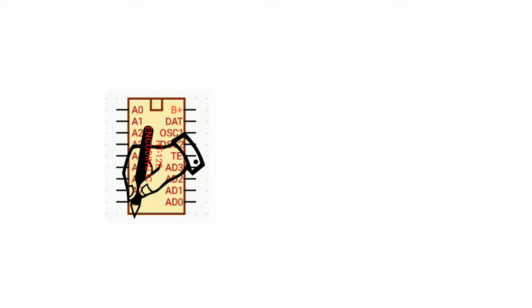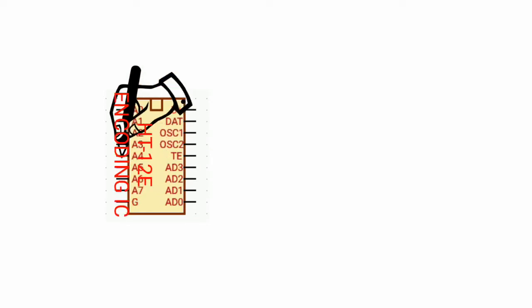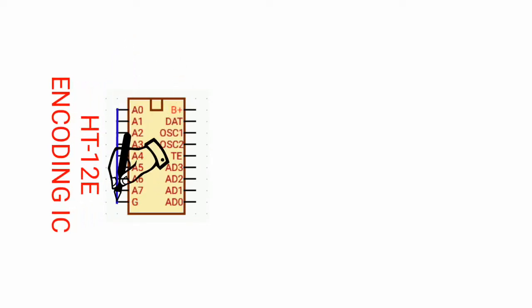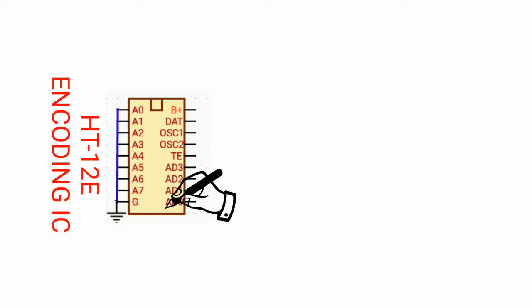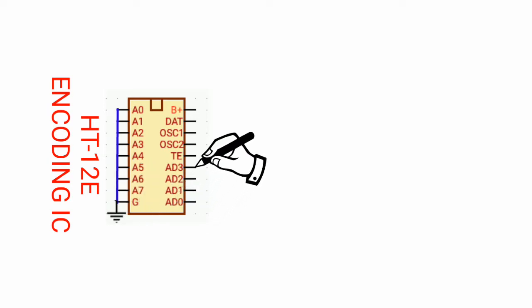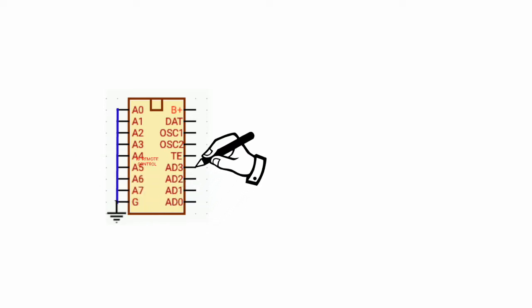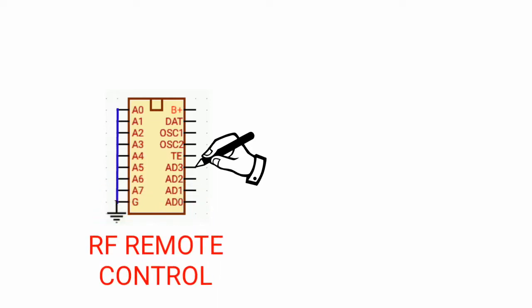Place the encoding IC. Just connect pin 1 to pin 9. Then all the address pins will be connected to the ground. The AD0 to AD3 will be connected to the momentary switch.